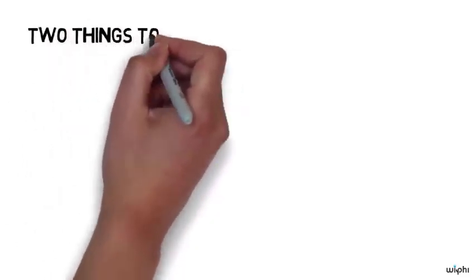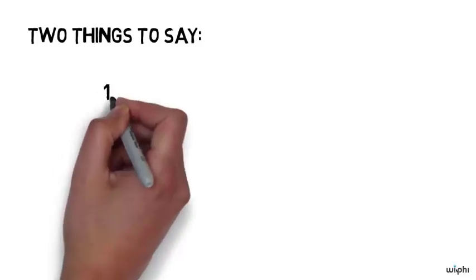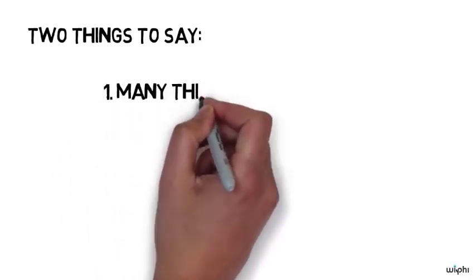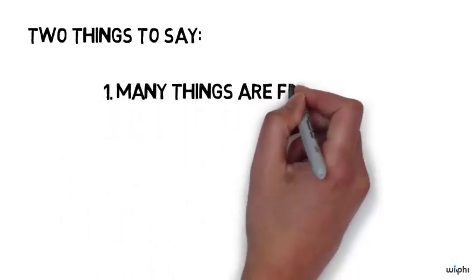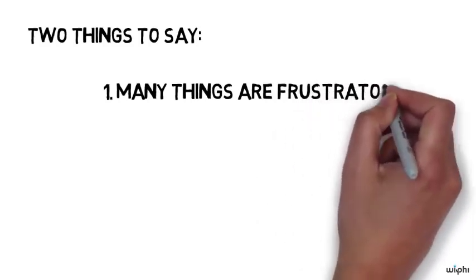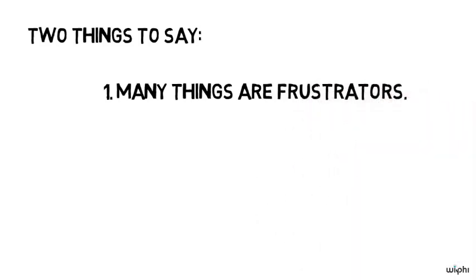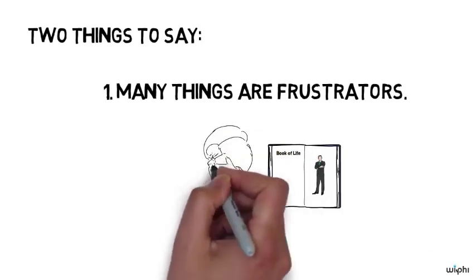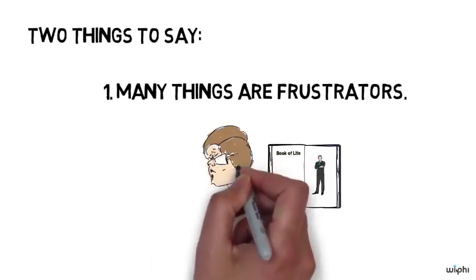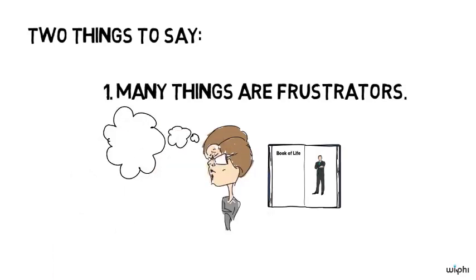Two things to say about this. First thing to say, it seems to me that many, many things, but particularly human beings, may well be frustrators. In fact, you might be a frustrator yourself. You might look at what's predicted for you to do when you turn that page in the Book of Life and you see what's predicted for you and you might do the opposite because you want to show that you are no puppet of what's happening in the Book of Life.